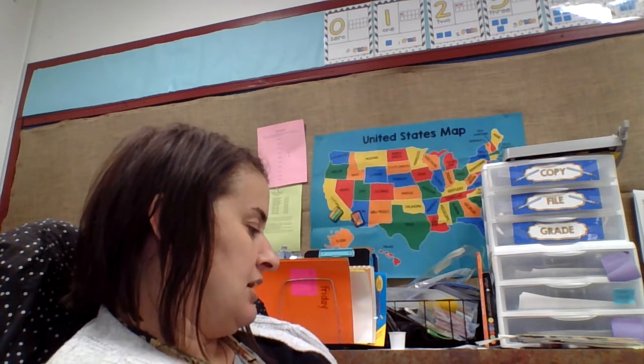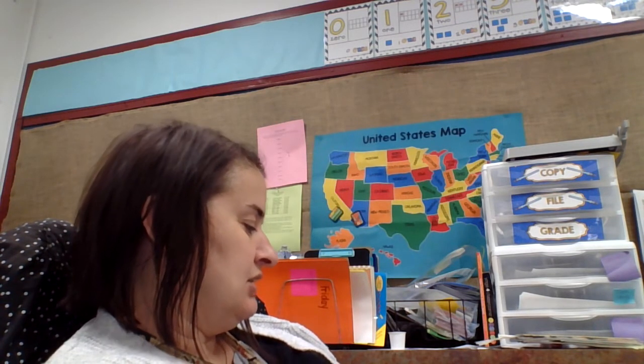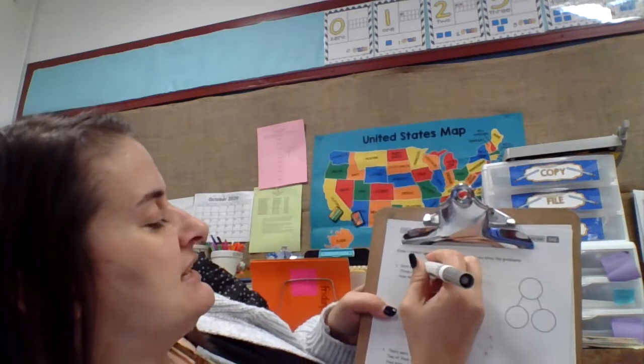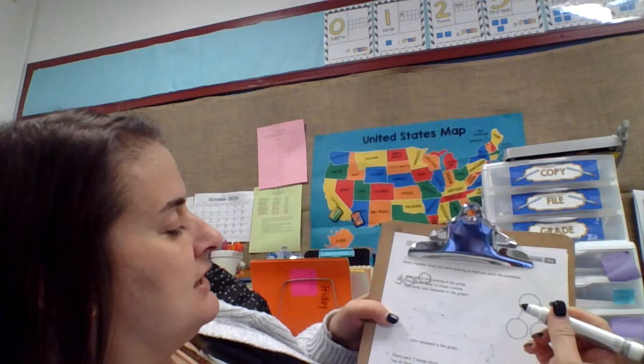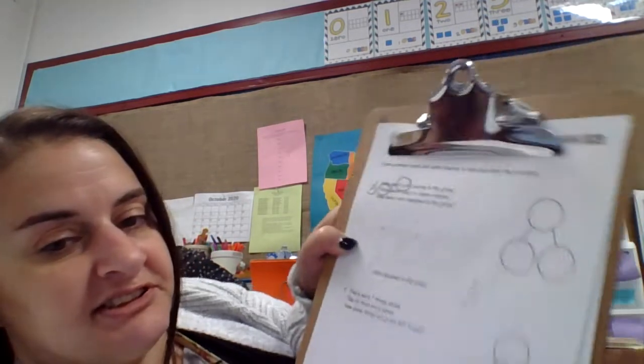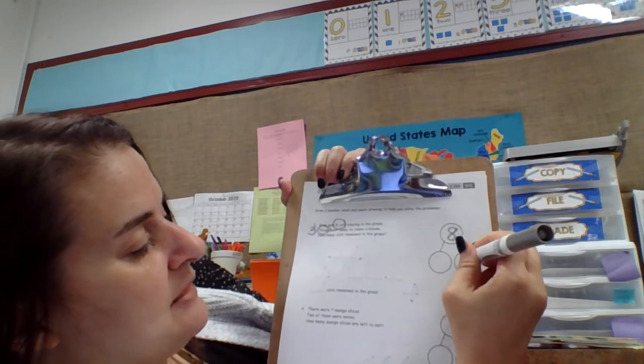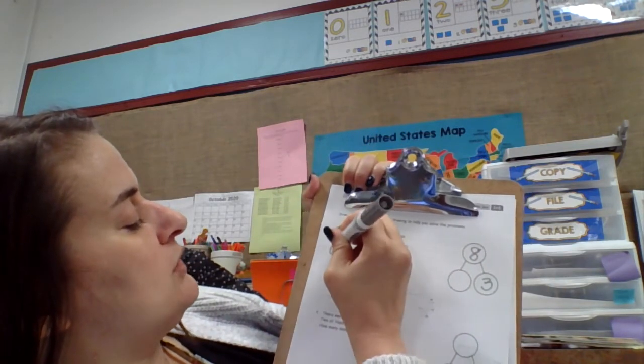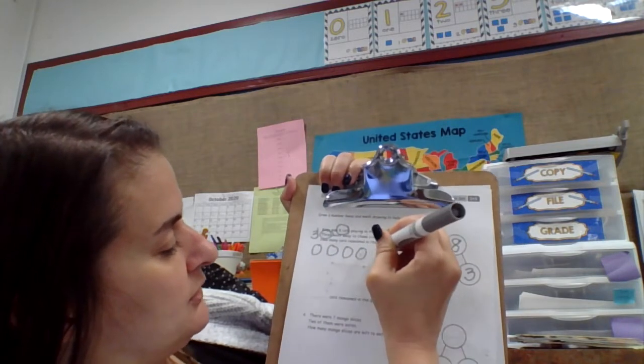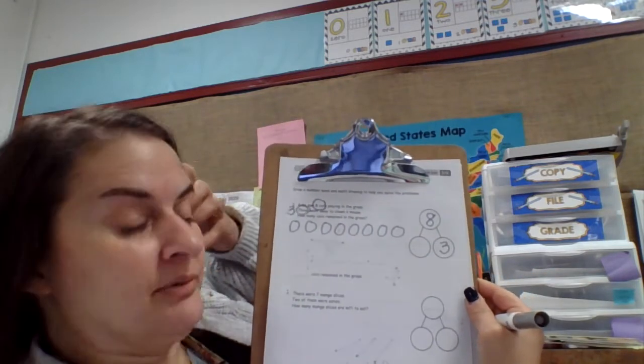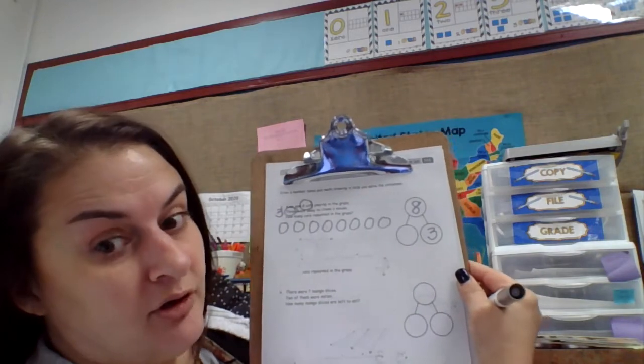On the back we have to draw our own math pictures. So we will practice that. Draw a number bond and a math drawing to help you solve the problems. Kate saw eight cats playing in the grass. Three went away to chase a mouse. I'll put that a little closer for you. How many cats remained in the grass? So there were eight and three is part. One, two, three, four, five, six, seven, eight. We just use math circles. We don't need fancy art. Unless you want to be doing math all day long.